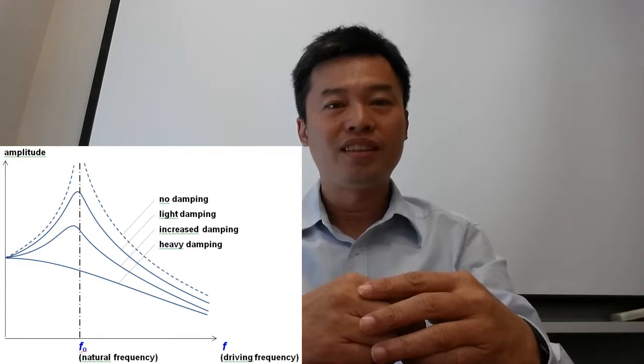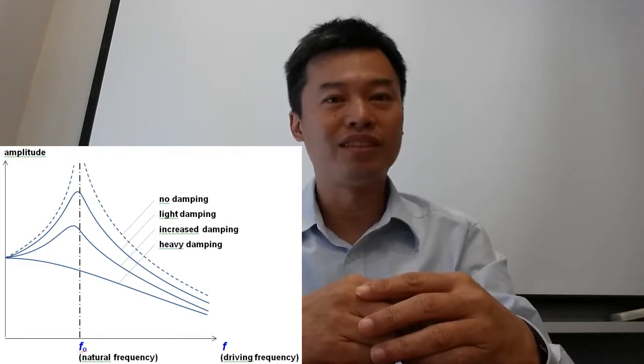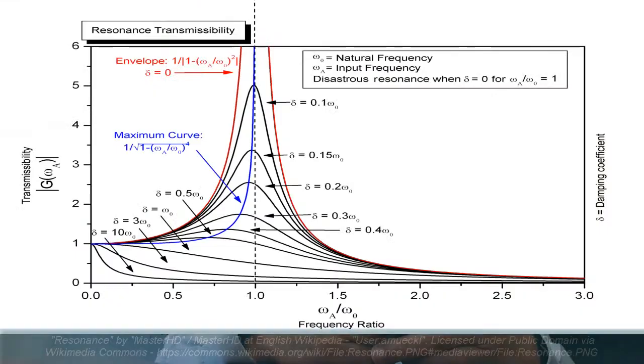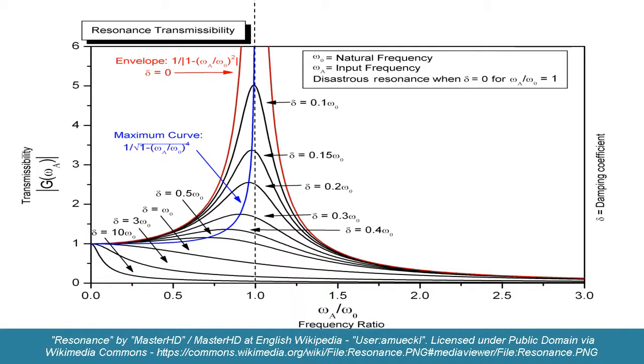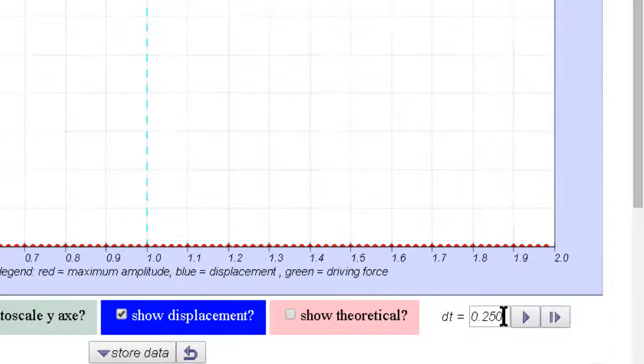Not many people can start off a video abstract by saying that they are probably the world first, and we are probably the world first to build a computer model made to illustrate the concept of force resonance graph. Speed up the simulation by changing the delta T to one second.